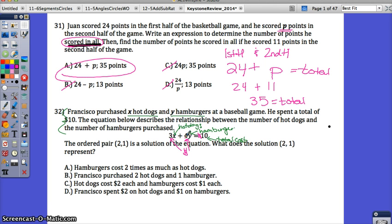The ordered pair (2, 1) is a solution of the equation. What does the solution (2, 1) represent? You don't even have to solve anything, just interpret what the solution means. Remember the order of the points in an ordered pair is always X then Y. X stands for hot dogs and Y stands for hamburgers.